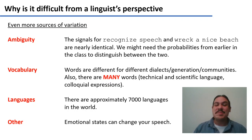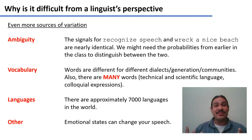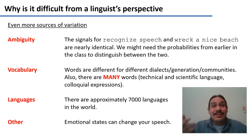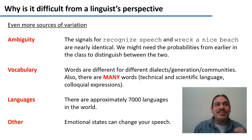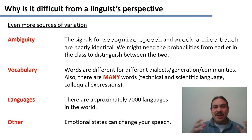Emotional states can also change your speech. When you're calm, you don't speak at the same volume or cadence as when you're angry. Just imagine asking your phone to dial 9-1-1 when you're calm versus shouting in the middle of an emergency. All of these factors create a great deal of variation in the signal that the system must learn to handle in order to transcribe speech correctly.